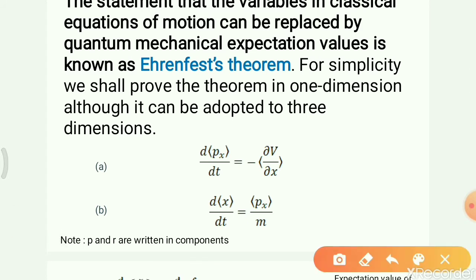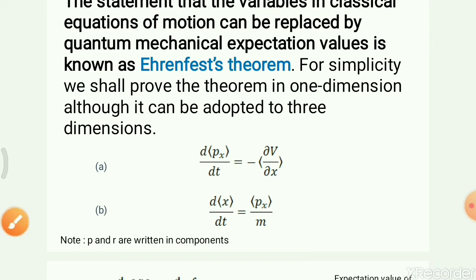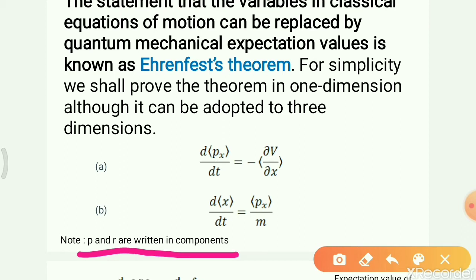As we saw in the previous slide, dp/dt equals minus dV/dr. In place of r, we use x, which is one component — you can also take y and z, as it holds three-dimensionally. For the sake of simplicity, we consider one component: x. Similarly, in place of r we take x, and for momentum we take the component px.